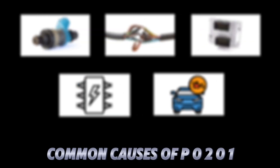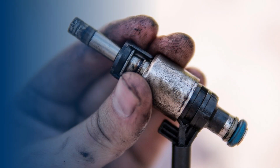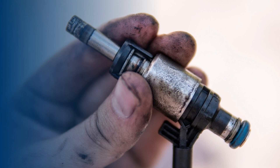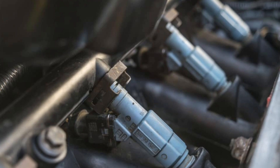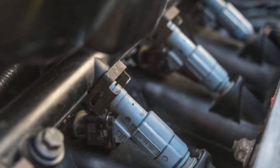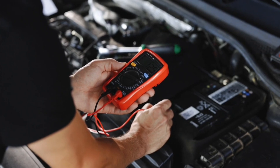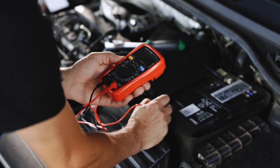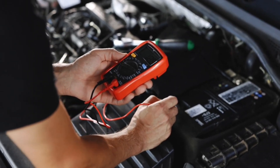Now, common causes of P0201. Number 1: Faulty fuel injector. If the injector is clogged, stuck open, stuck closed, or internally damaged, it won't deliver the correct amount of fuel. Disconnect the fuel injector electrical connector. Use a multimeter to check injector resistance — typical range is 10–18 ohms. If resistance is out of range, replace the injector.